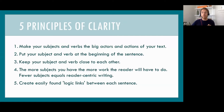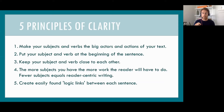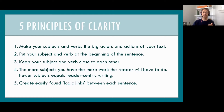Here are the five principles. First: make your subjects and verbs the big actors and actions of your text. Second: put your subject and verb at the beginning of the sentence. Third: keep your subject and verb close to each other. Fourth: the more subjects you have, the more work the reader will have to do — fewer subjects equals reader-centric writing. Fifth: create easily found logic links between each sentence. These are principles, which is different than rules. If you follow these principles, you are more likely to create clarity — but they are not guaranteed rules.